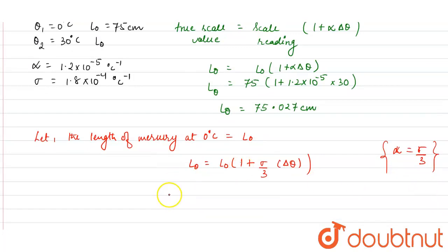Now, L0 we have calculated as 75.027 equals L0 into 1 plus sigma is given to us as 1.18 into 10 to the power minus 4 divided by 3 into delta theta is 30.